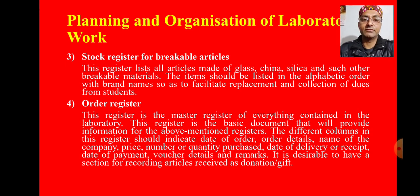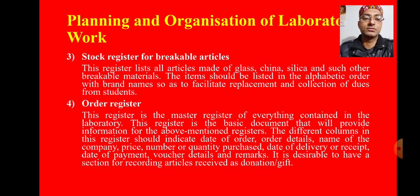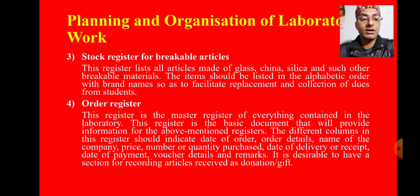The fourth is the order register, which is the master register of everything contained in the laboratory. This register provides information for the above-mentioned registers. The different columns in the register should indicate: date of order, order details, name of the company, price, number or quantity purchased, date of delivery or receipt, date of payment, voucher details, and remarks. It is also desirable to have a section for recording articles received as donation or gift.